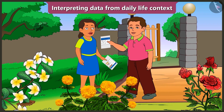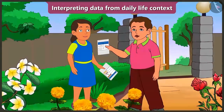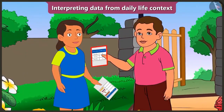I mean to collect the data. But the data about all the blossomed flowers is already filled in this table. That's why you don't need to count the flowers one by one in the garden. Because whatever details are already filled in this table about the flowers, you just need to understand that data.